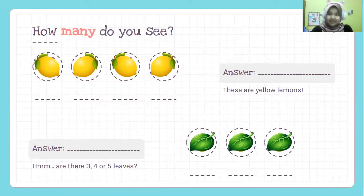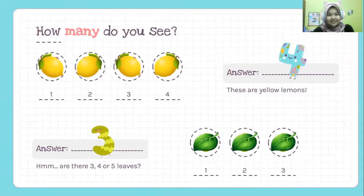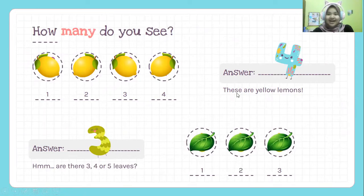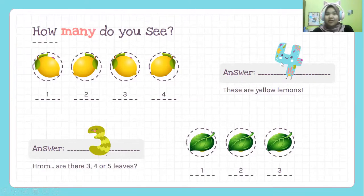How many lemons? You answer it? Okay, now let's see the right answer. Yes, that's right. There are one, two, three, four — four lemons. Yes, the answer is four. That's right. These are yellow lemons. Four lemons represent number four.